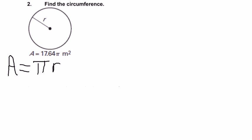Area of a circle is πr². So I'm going to take this 17.64π and substitute that in for A. In this case, it's square meters.